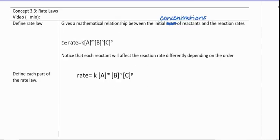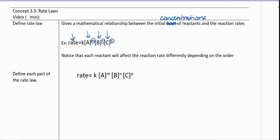A rate law is a mathematical expression that describes the relationship between the initial concentrations of the reactants and the overall reaction rate. In other words, we're looking at how the rate is going to be affected by changing the concentration of each reactant. Each reactant could affect the reaction rate differently, and these orders — these exponents — give us an indication of how the concentration of that particular reactant affects the overall reaction rate.